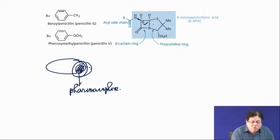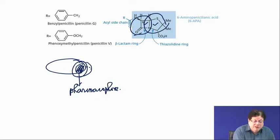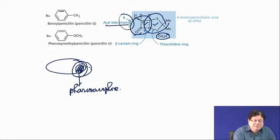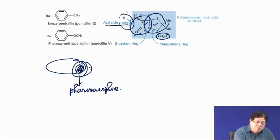The pharmacophore has two fused rings: a beta-lactam ring fused to a thiazolidine ring. There is a substituent amine that is acylated, giving an acyl side chain, and an alpha-carboxy group attached to the thiazolidine ring. The variation between different penicillins — ampicillin, amoxicillin, cloxacillin, methicillin — differs only in the R group on the acyl side chain.